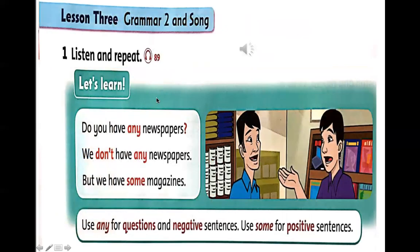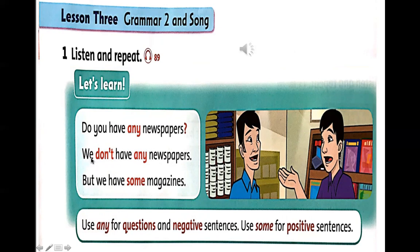SOME dùng trong câu khẳng định. Bây giờ chúng ta hãy bắt đầu bài học. Đầu tiên các bạn hãy listen and repeat — Lesson 3, Grammar 2. Let's listen first. Listening 89 — listen and repeat. Do you have any newspapers? We don't have any newspapers. But we have some magazines. Các bạn thấy đó, cái phần lesson chúng ta ngày hôm nay cũng chủ yếu nói về ANY và SOME. Đây là cái ví dụ giống cái ví dụ hồi nãy.